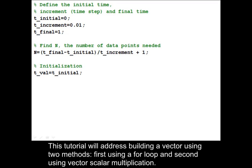This tutorial will address building a vector using two methods: first using a for loop, and second using vector scalar multiplication.